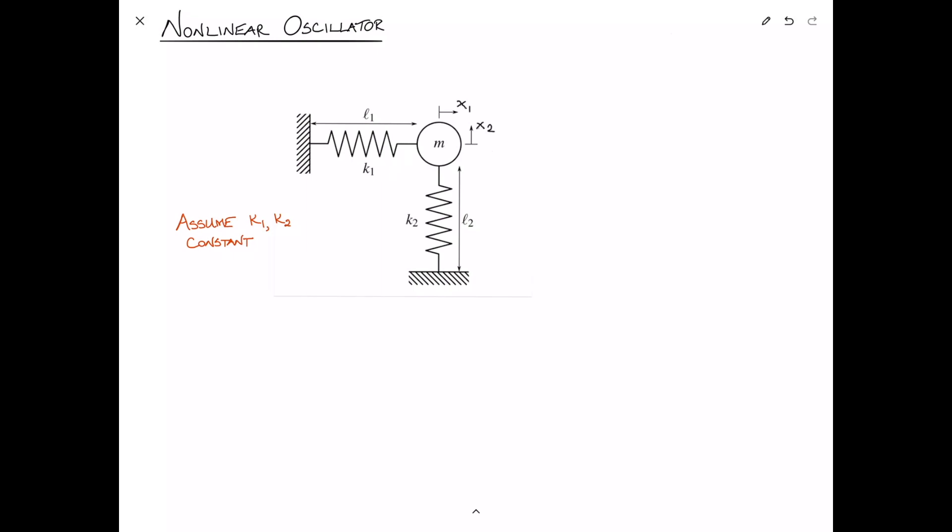Perhaps give the video a brief pause and just think how would you treat this? How would you write the potential energy for the springs? Because then we could plug it into Lagrange's equations, and we're away. Do we do x1 as a function of x2? Or what exactly do we do here?